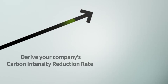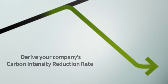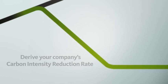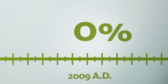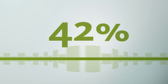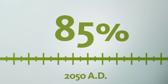Lastly, use the scientific community's recommended reduction target for climate stabilization for 2050 to derive your company's carbon intensity reduction rate. This is the rate at which your carbon intensity ratio must decrease annually in order to set your company on track for climate stabilization.